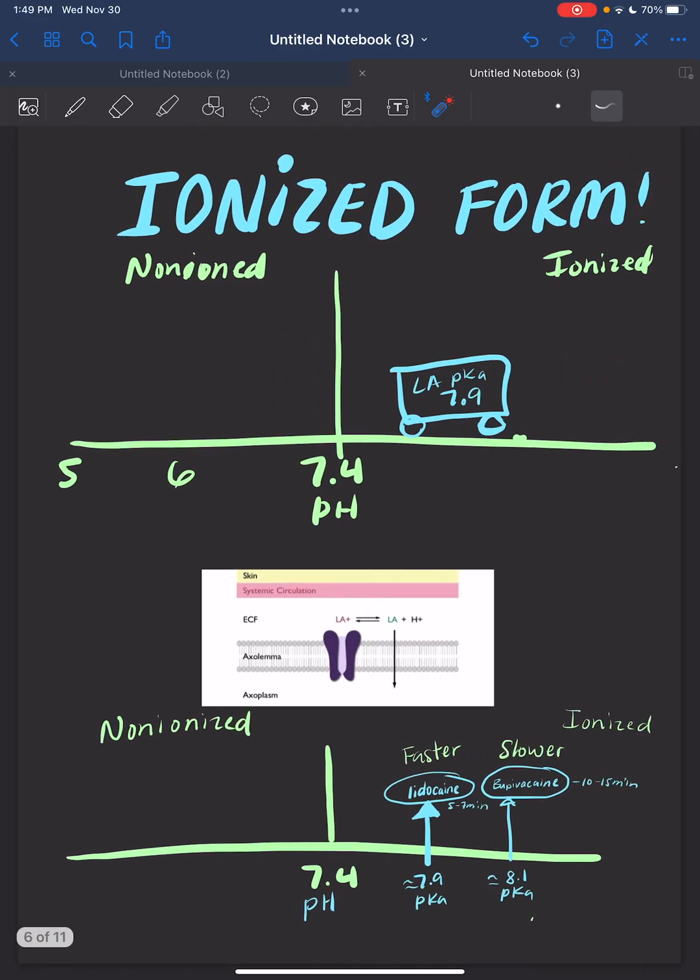You got it, the ionized form. We're going to use Maggie's cart illustration here. For example, lidocaine's pKa is around 7.9. Because it's 7.9, it hasn't crossed the 7.4 threshold yet, so the ionized form predominates. The problem is that to cross the lipid bilayer of the cell membrane, we have to have the non-ionized form.